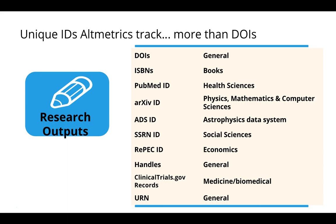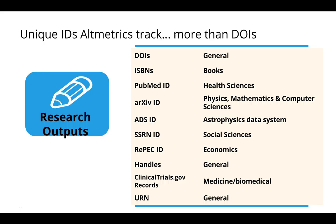Altmetrics tracks more than DOIs — it can track ISBNs, arXiv IDs (an open access database), SSRN IDs, and many other things. It even now tracks clinical trials from .gov records in the US. They track lots of news outlets, academic social media blogs, post-publication review sites such as Publons and Pubpeer, policy documents, and other sources such as Wikipedia, which has increasingly been given more credence within the academic sphere.